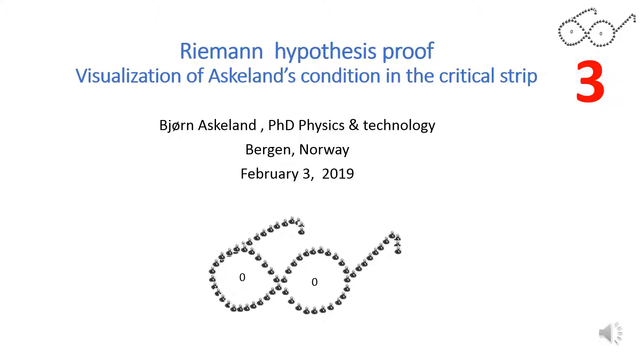The first video is a proof of the hypothesis with Fourier transform. The second video is a visualization of Askeland's condition as a phase plot on the critical line. This third video is a visualization of Askeland's condition in the critical strip.